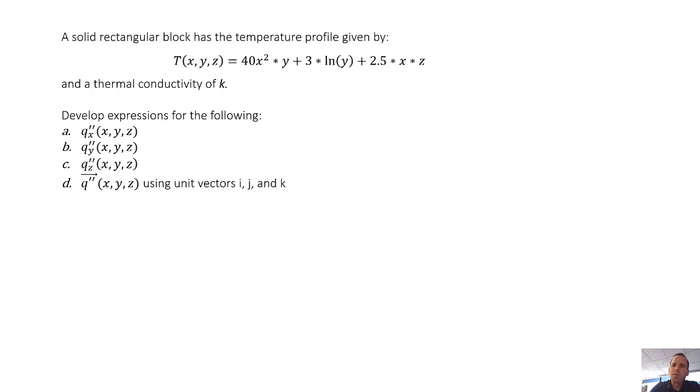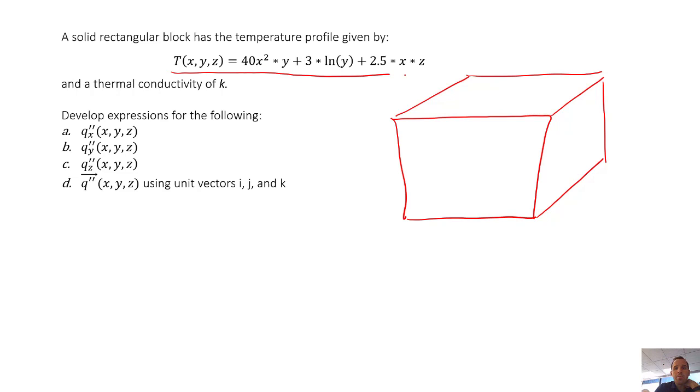So basically what we're asking is let's say we have a big solid block of stuff, solid material, that might look something like this. So we would be looking at a temperature map with this equation. So let's say somewhere within here at some given x, y, and z we would be able to use this equation to tell us what the temperature is.